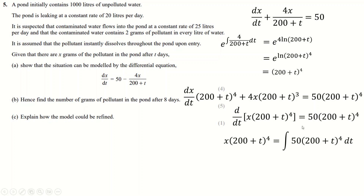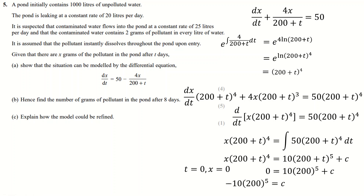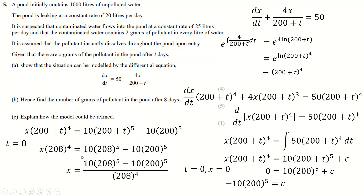Integrating both sides with respect to t: the right side integrates to 50 times (200 plus t)^5 divided by 5 plus C, which is 10(200 plus t)^5 plus C. When t equals 0, X equals 0 (no pollutant initially), giving us C. After 8 days, substitute t equals 8 and solve for X. To refine the model, we should note that the pollutant is assumed to instantly dissolve uniformly throughout the pond — clearly unrealistic, since the area near the inlet would be far more concentrated.